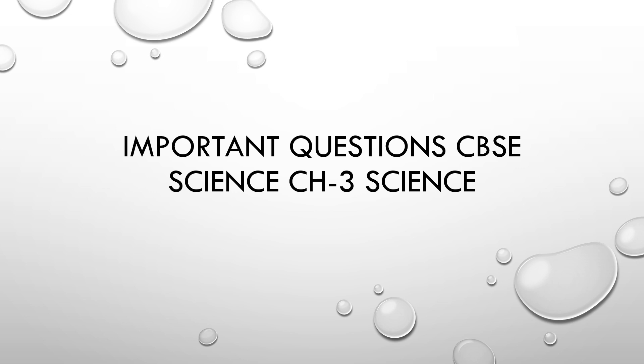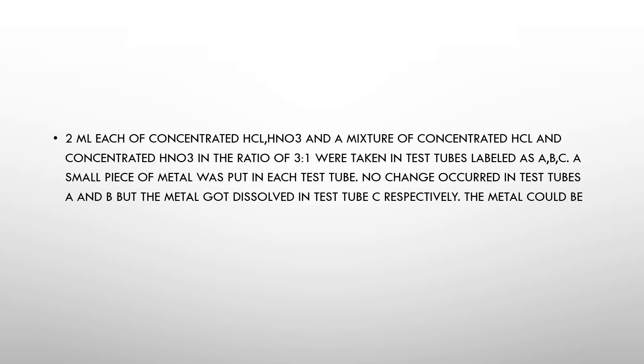Hello all, welcome back. I'm back with another important video. In this video we'll be discussing some important questions of Chapter 3 CBSE Science. Let's go to the first question: 2 ml each of concentrated HCl, HNO3, and a mixture of concentrated HCl and concentrated HNO3 in the ratio of 3:1 were taken in test tubes.